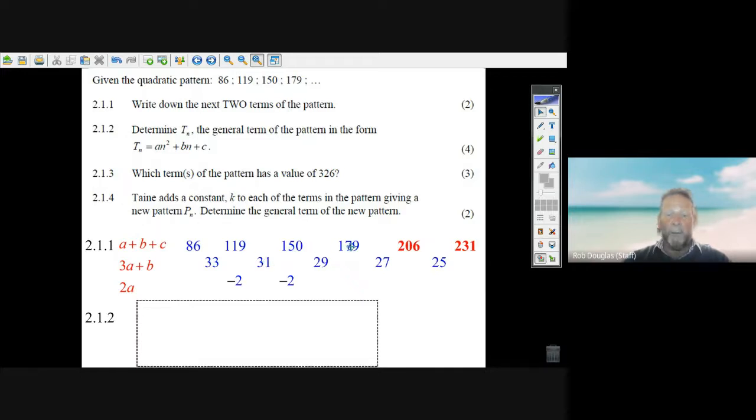And hey, that's pretty good. Those are called the first differences. Then 31 minus 33 is minus 2, 29 minus 31 is minus 2. Our second differences are minus 2, and when they go constant, you know you've got a quadratic sequence.